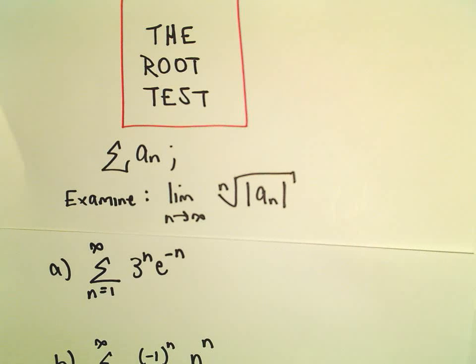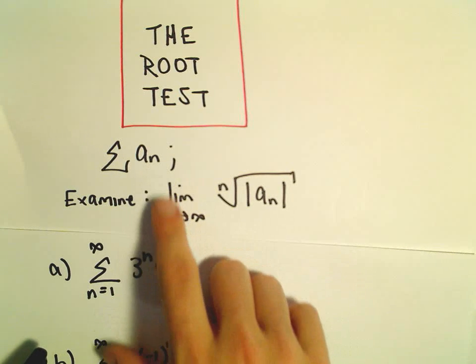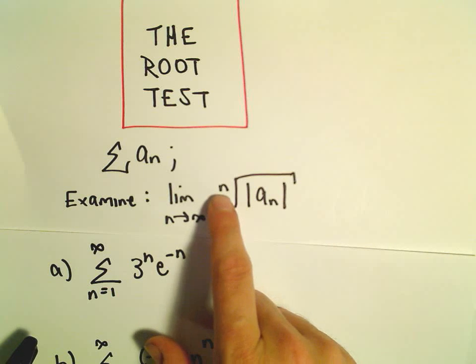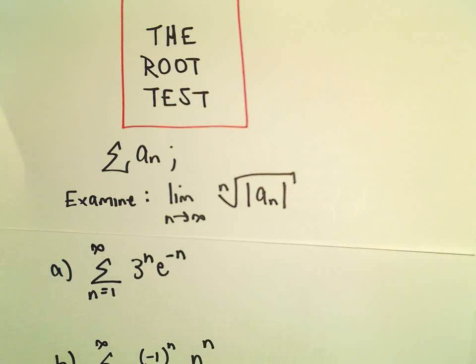Alright, in this video we're going to start looking at the root test to determine whether or not a series converges or diverges. The root test says we take our series, the formula, and we look at the limit as n goes to infinity of the nth root of the absolute value of a sub n.